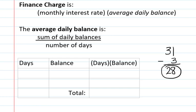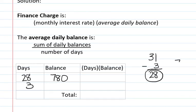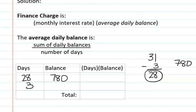But then for three days, she had something less, right? She made a $400 payment. So instead of having a $780 balance, 780 minus 400 is 380. So for those three days, she had a balance of $380.